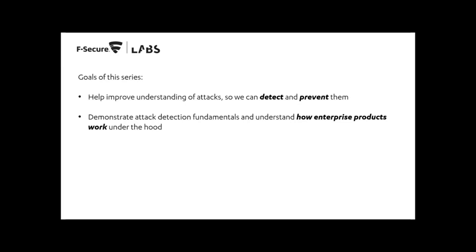It isn't going to be an exhaustive look at each attacker technique. We're going to look at some examples of detection strategies you could employ. For further reading, I'd highly recommend Jared Atkinson's blogs on capability abstraction and funnel fidelity — really good for understanding the nature of the detections you're building and where the limitations are. Our hope is that what we show you in the next few weeks are attack detection fundamentals that allow you to understand how your enterprise products work under the hood.